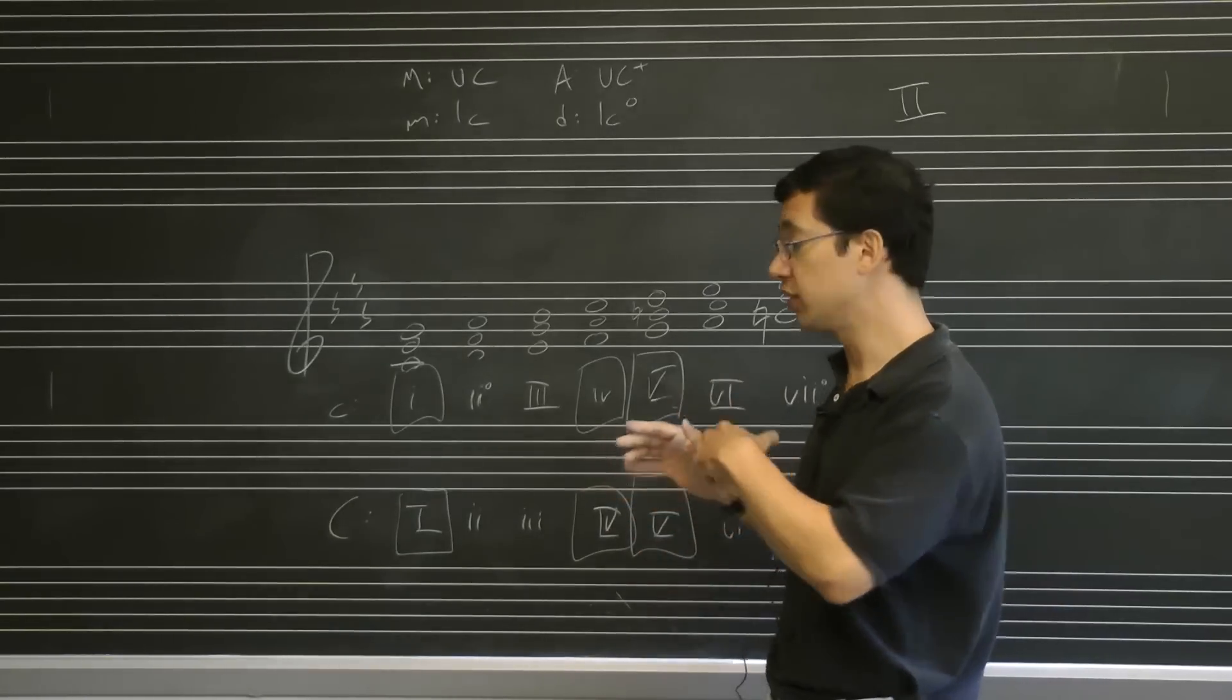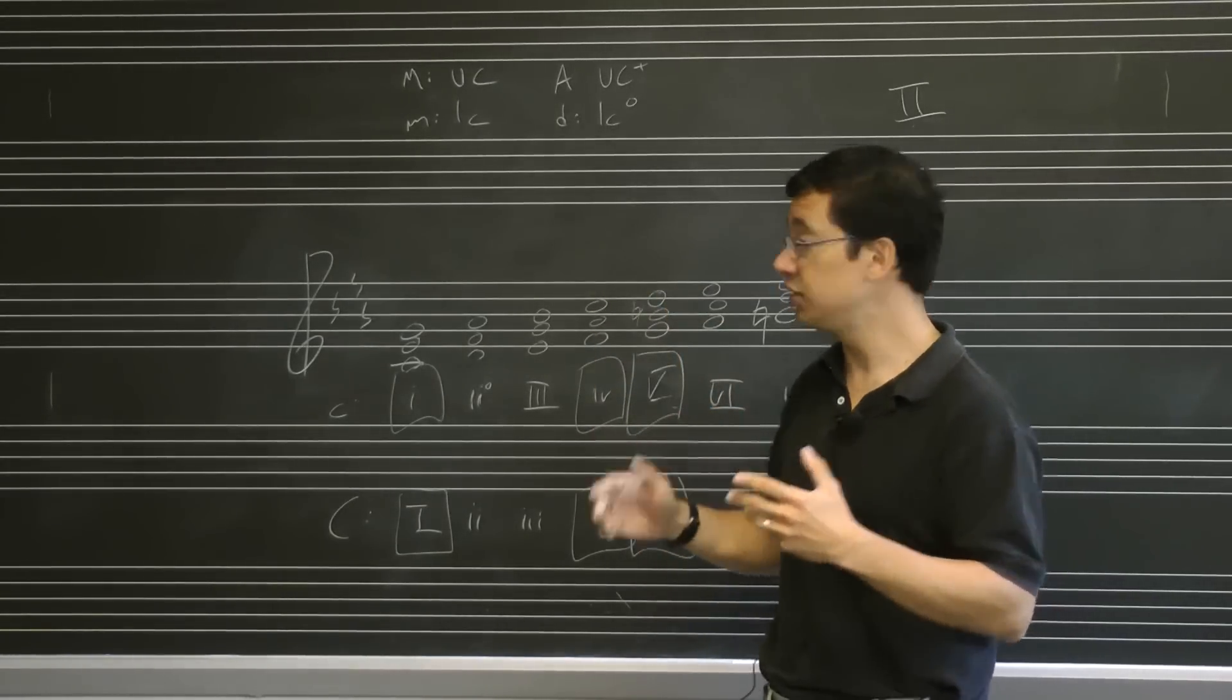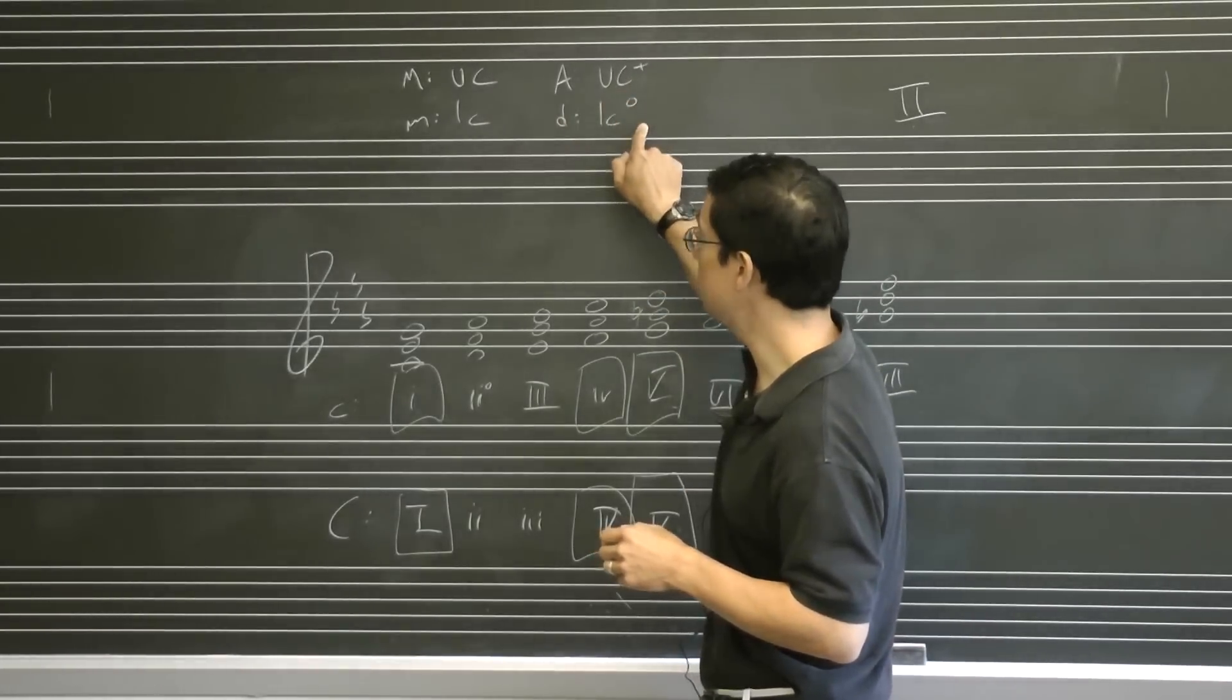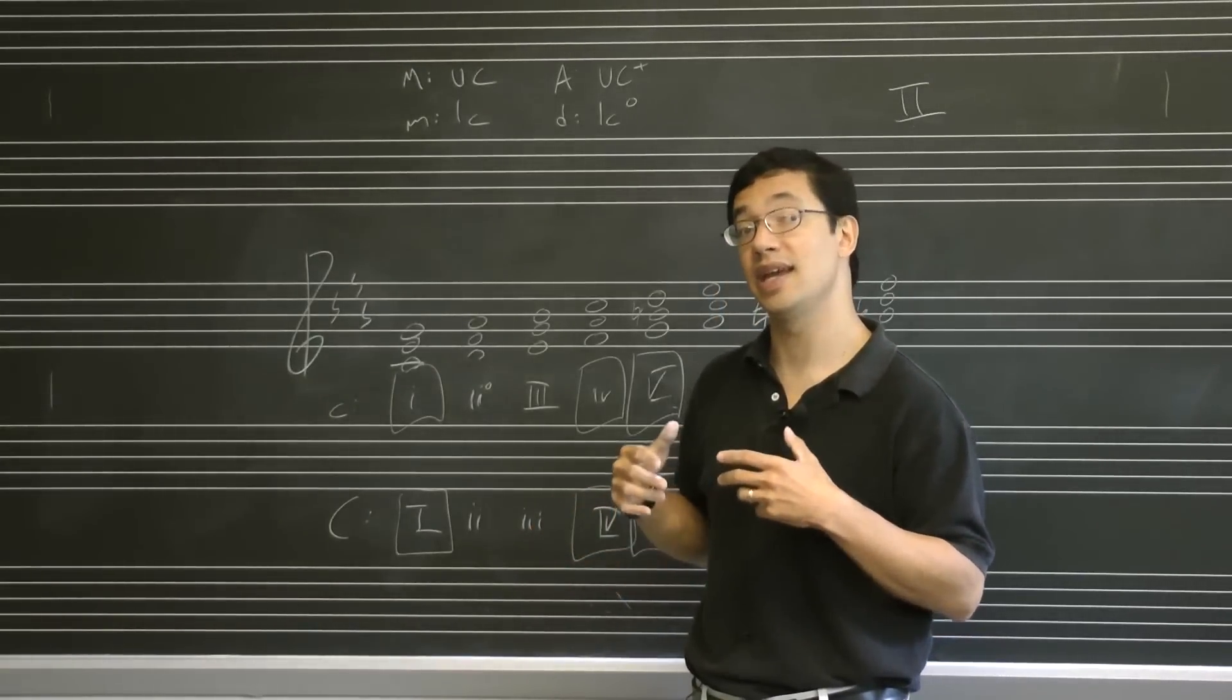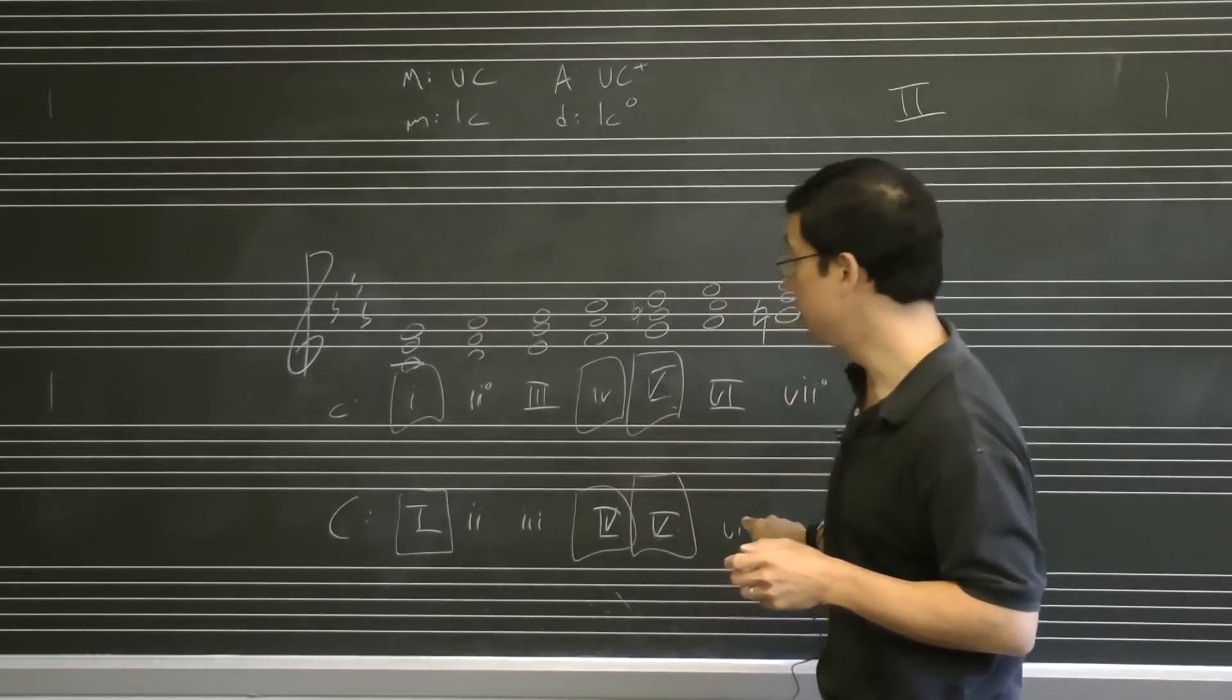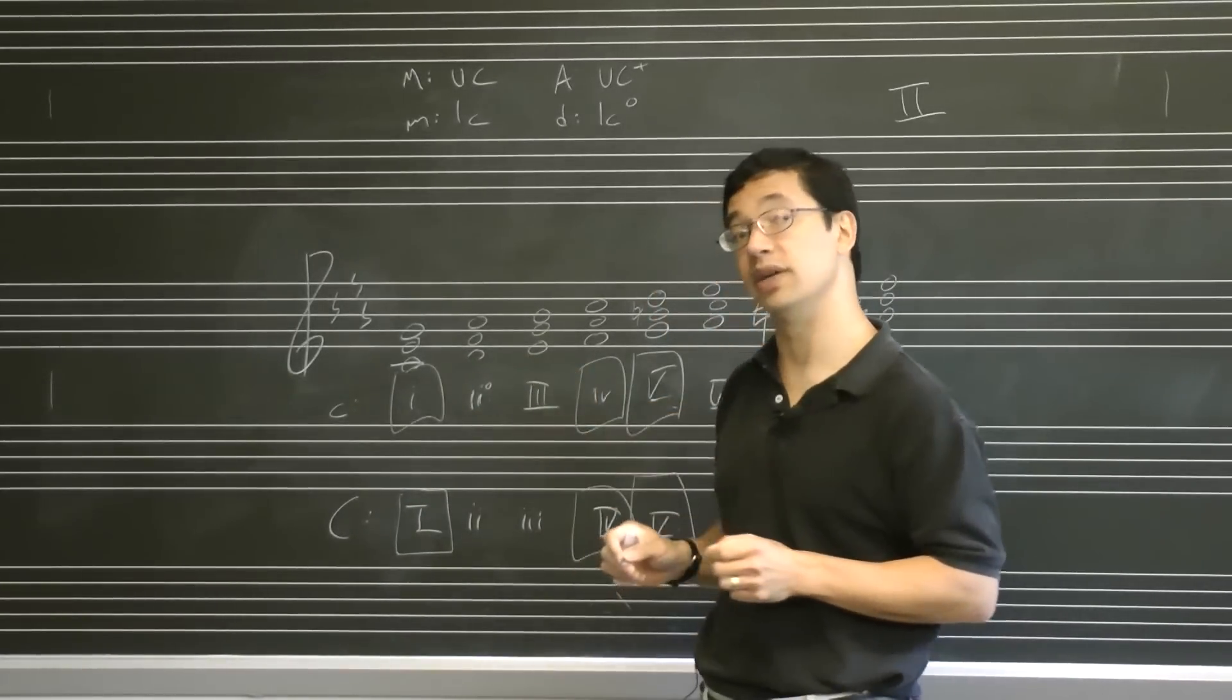So just remember, for everything that you do and in all the lecture notes, we're always using this system: uppercase, lowercase, uppercase with a plus, lowercase with a circle to indicate the quality of the triad, labeling with the Roman numeral, with the number corresponding to the scale degree of the root.